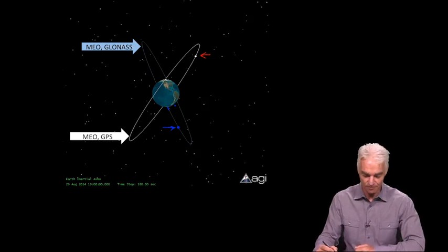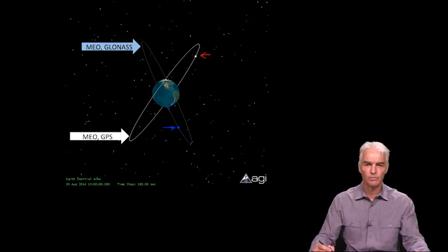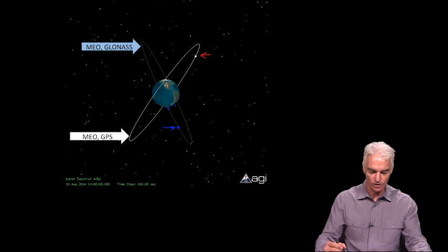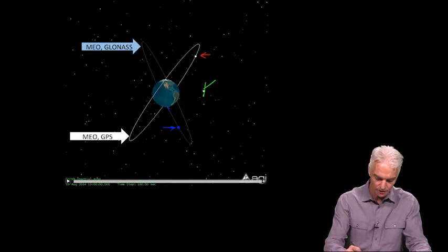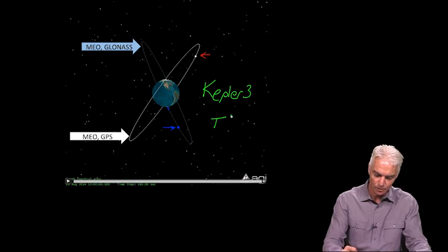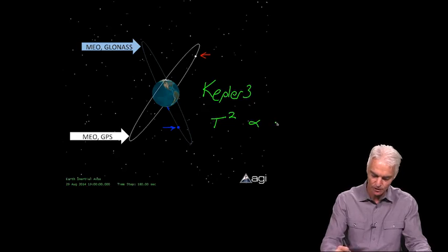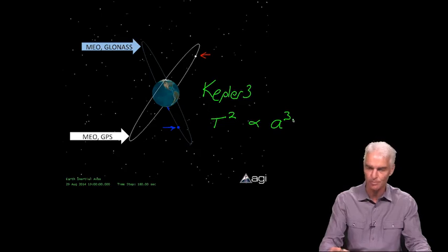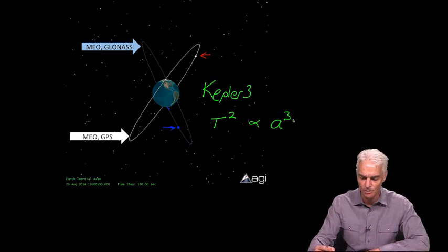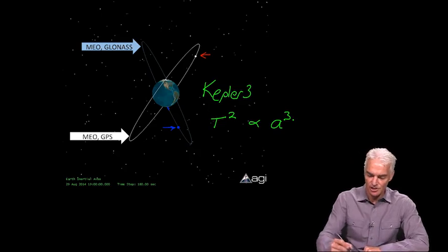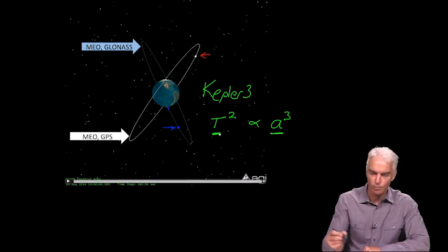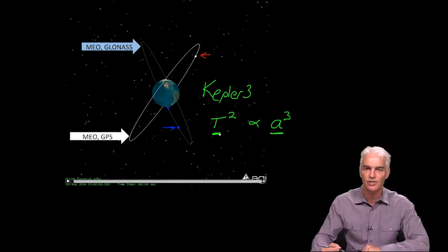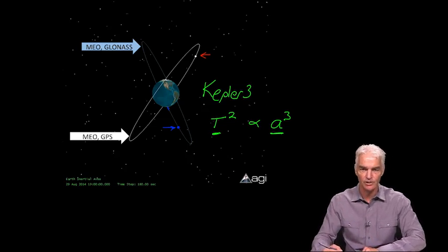That makes sense because you learned about Kepler's laws. Kepler's third law says that the orbital period of an orbit is proportional to the semi-major axis. The orbital period squared is proportional to the semi-major axis cubed. GLONASS has a slightly smaller semi-major axis, therefore it must have a smaller period. It completes an orbit quicker, and that's what you saw in this simulation.